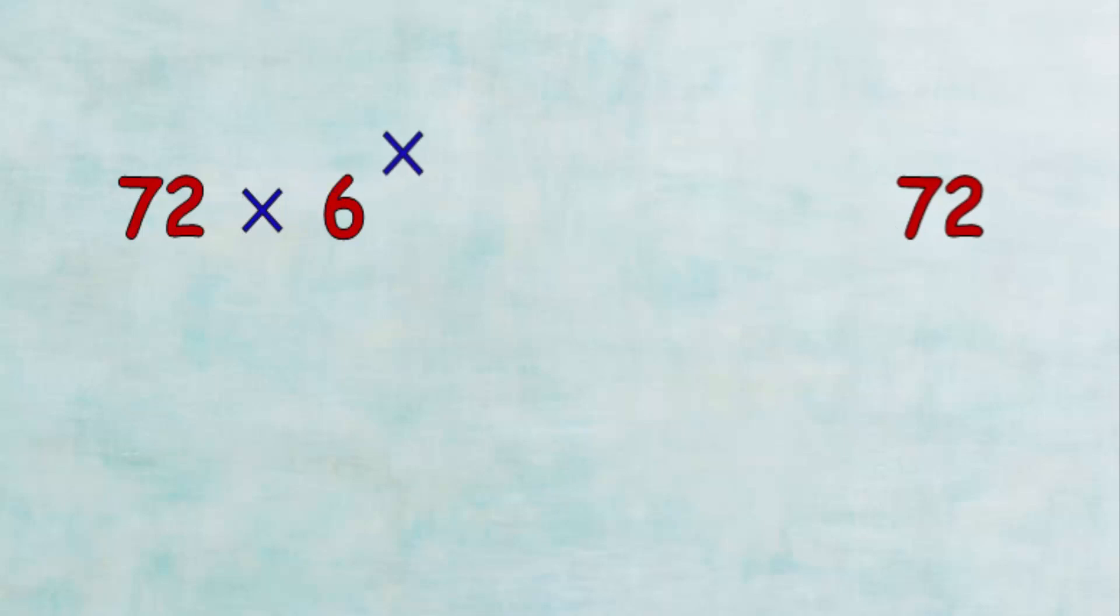After putting the numbers in a vertical way for easy multiplication, we will multiply 6 by 2, which equals 12. Note that we cannot write 12 in the result.